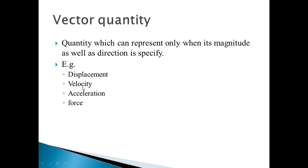Similarly, velocity also requires direction as well as magnitude. The same applies to acceleration and force. These are the vector quantities. The major difference between scalar and vector quantity is that scalar quantity requires only magnitude, while vector quantity requires magnitude as well as direction.